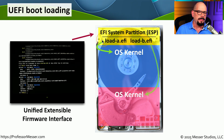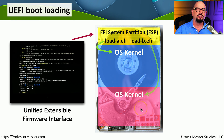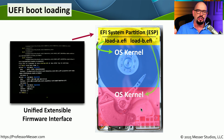For example, there might be a load A EFI configured to start one OS kernel, and a load B EFI configured to start another OS kernel. You're usually presented on screen with an option of which operating system to start, and the correct OS kernel will start based on the EFI files.